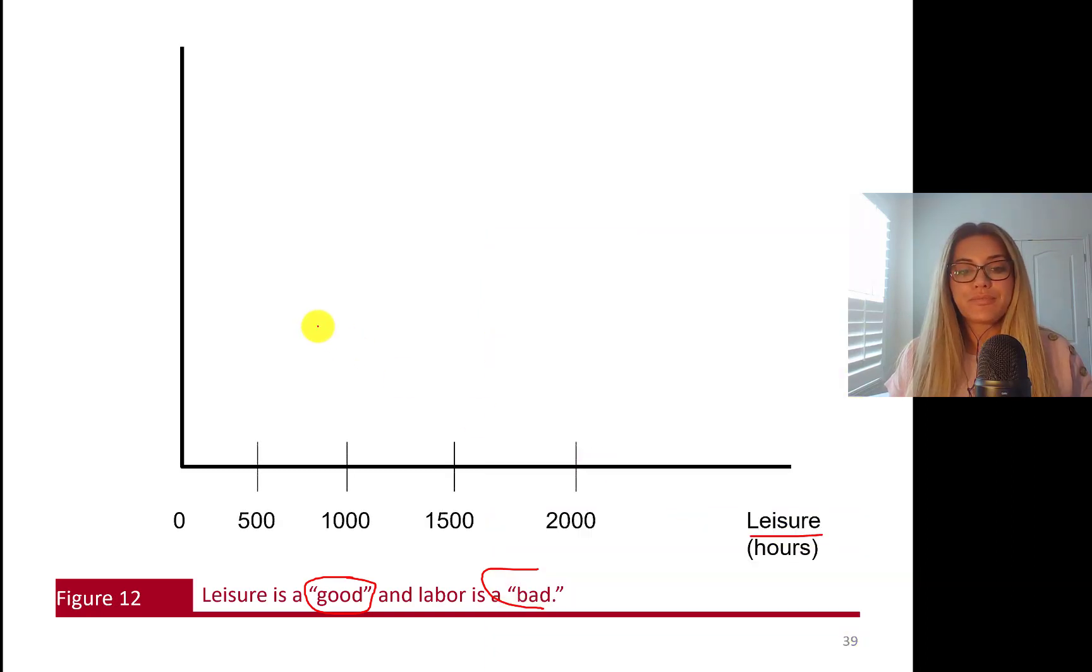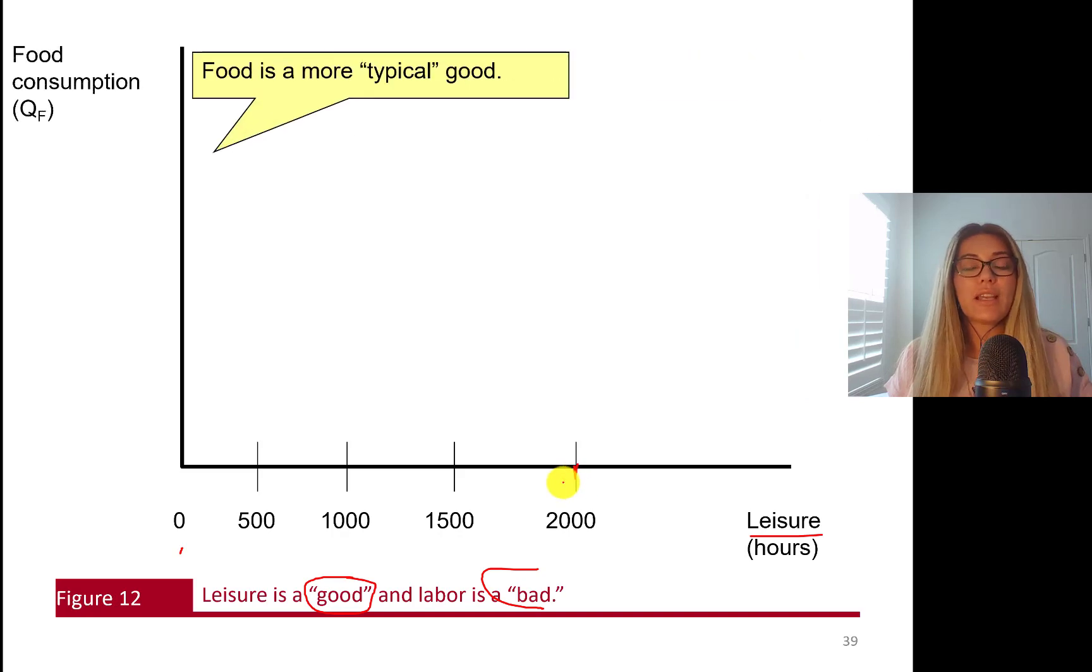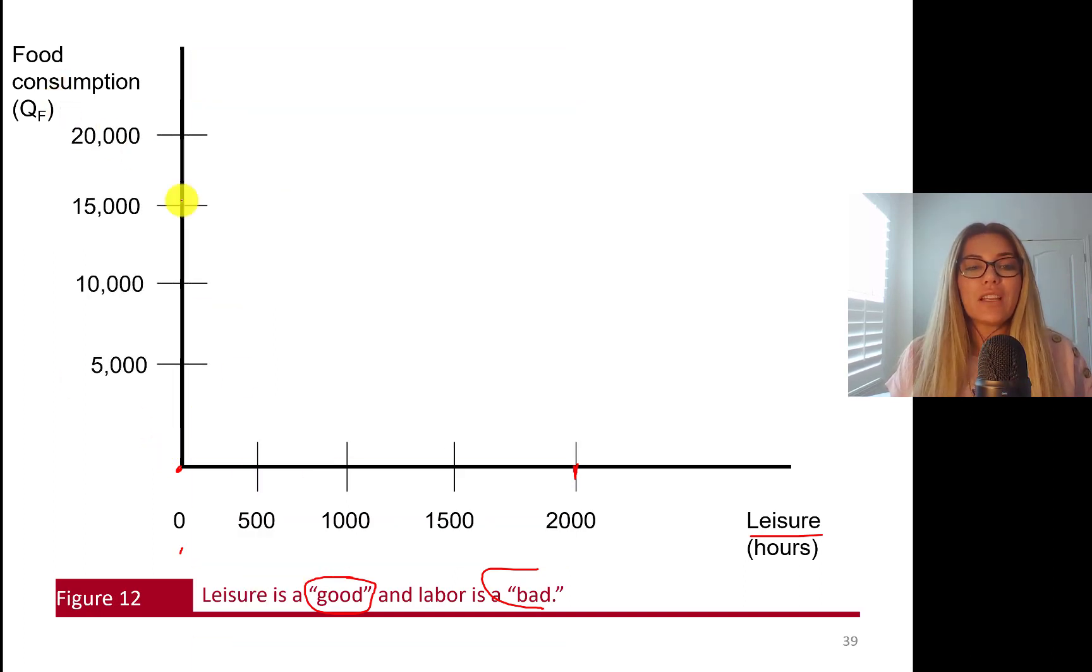Leisure is a good good and labor is bad in the sense that you don't get happiness for, like, imagine this, right? You are watching Netflix, your favorite TV series versus working. So most people would prefer relaxing and watching Netflix series. However, right now it's work time actually.